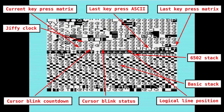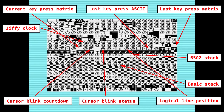Here we can see on the eighth line down, near the middle, we can see the jiffy clock counting up. And two lines below, slightly to the left, we can see the cursor blink countdown, which normally counts 20 jiffies before each blink of a cursor. To the right of that, we can see a character flicking between 'a' and '@'. The '@' is zero and 'a' is one, so this is actually the cursor blinking — we can see it blinking here in zero page.